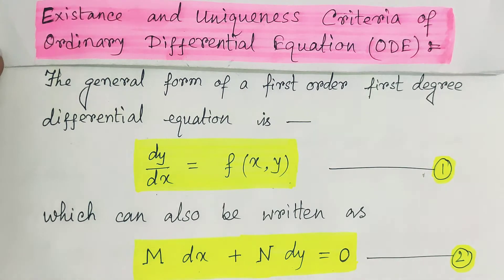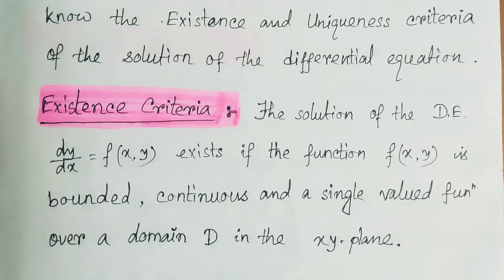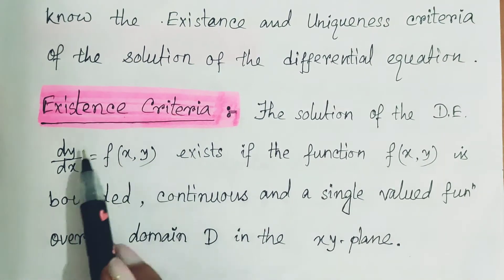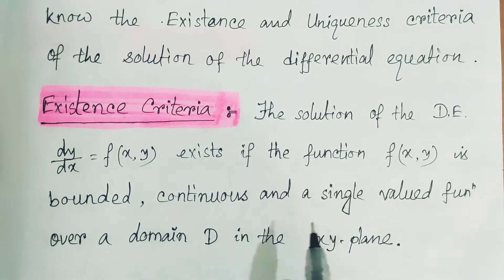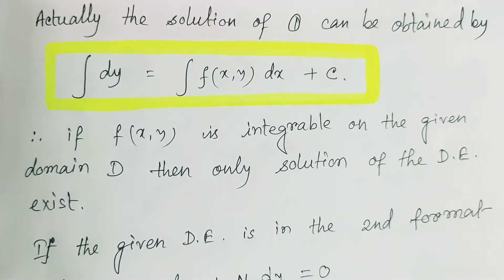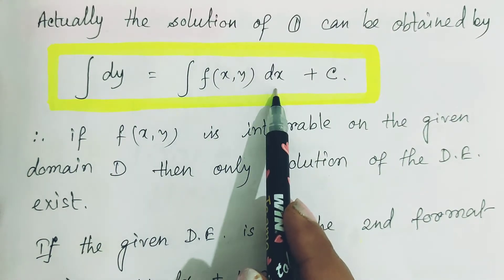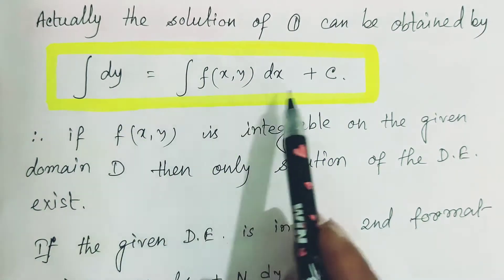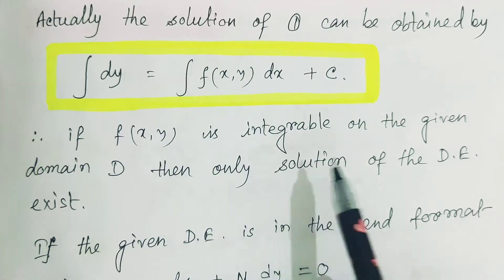For this type of differential equation, whether the solution exists or not, and if it exists then whether it is unique or not — for that we have the existence criterion and the uniqueness criterion. For the existence criterion: if f(x,y) is a bounded, continuous, and single-valued function over a given domain D, then we can say the solution for this differential equation exists.